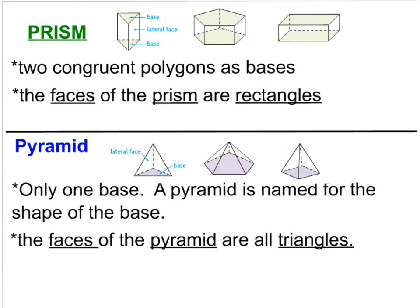There are three main families I want to teach you about polyhedrons. The first two are prisms and pyramids. A prism has two congruent polygons as bases, and the faces of the prism are all rectangles. Looking at this example, I have two congruent polygon bases — a triangle and a triangle — and all the faces are rectangles. So we would call this a triangular prism.